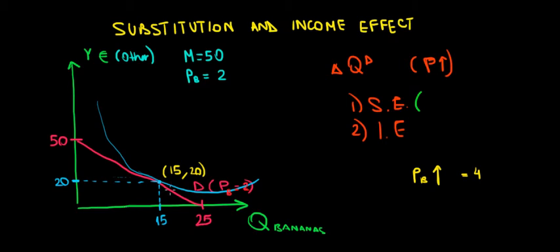So the intercept, the intercept on the quantity of bananas axis would be 12.5. And let's say that would be, it's not going to be very accurate, but anyway, 12.5, maybe something like that. Now, the intercept here is still 50 because we can still spend all the money on 50 euros on other goods. So if we connect these points, so over here, that would be the demand for bananas when the price equals to 4.